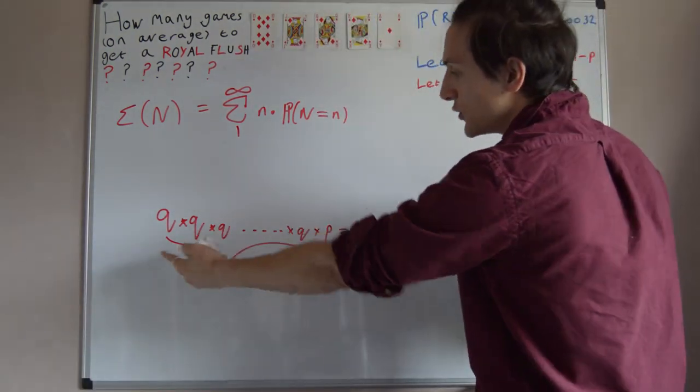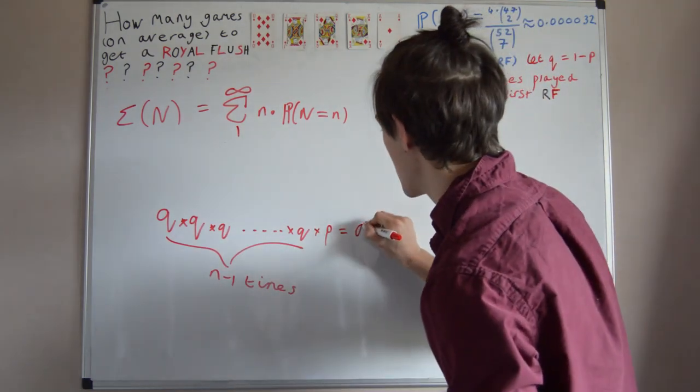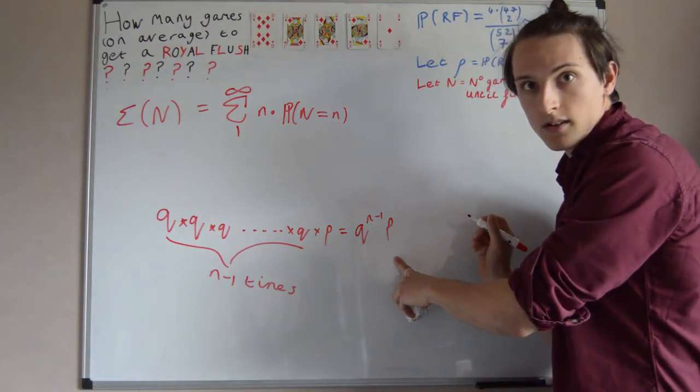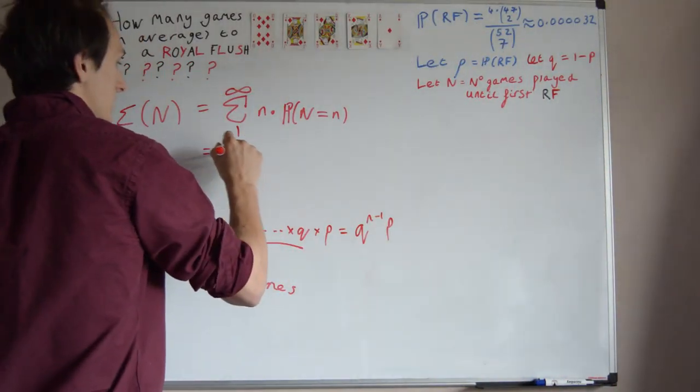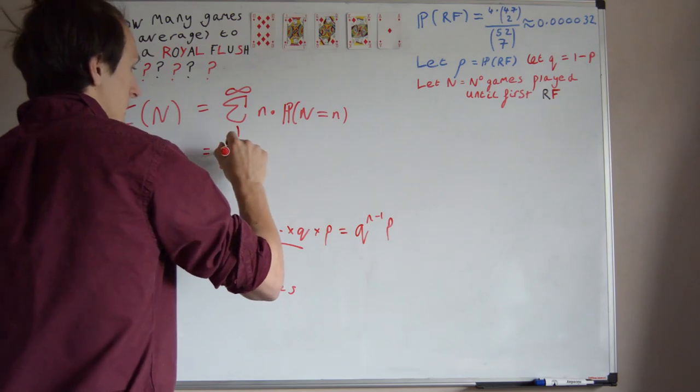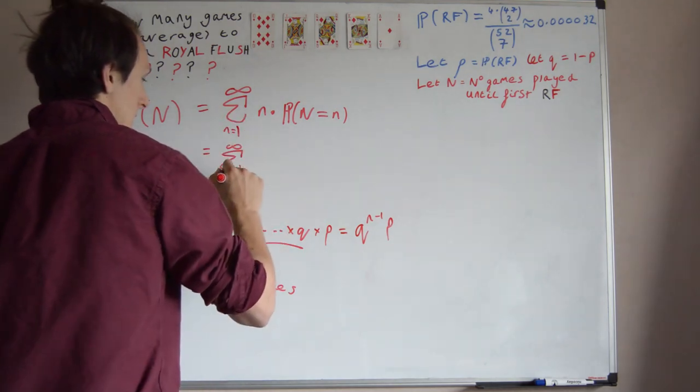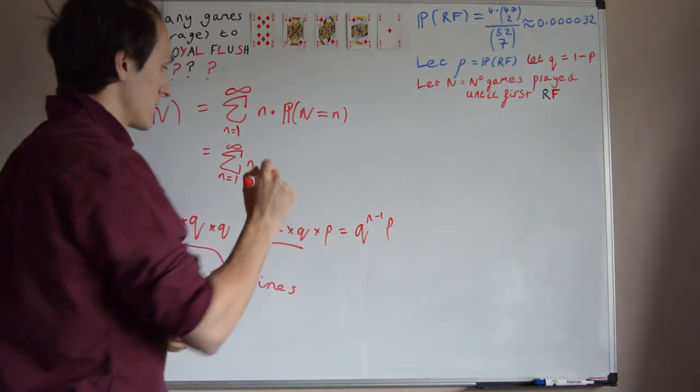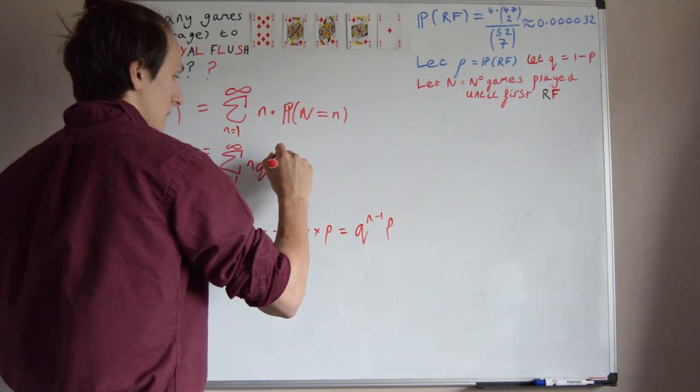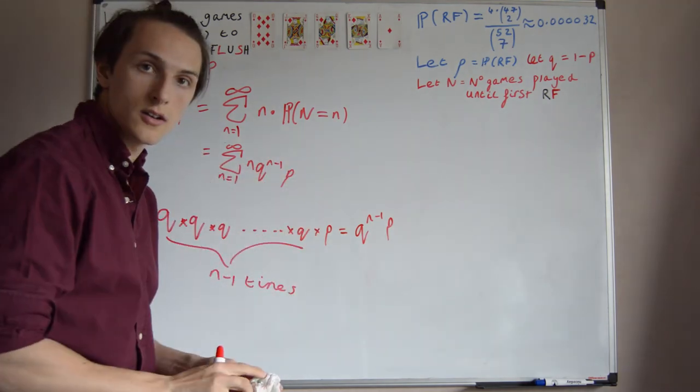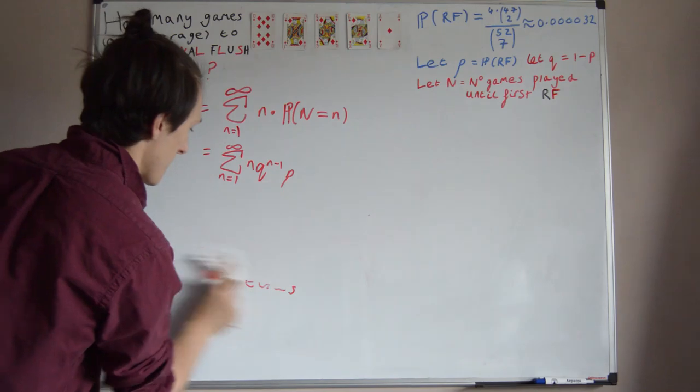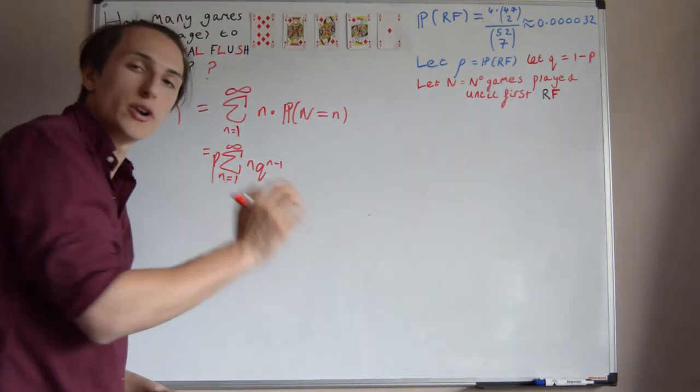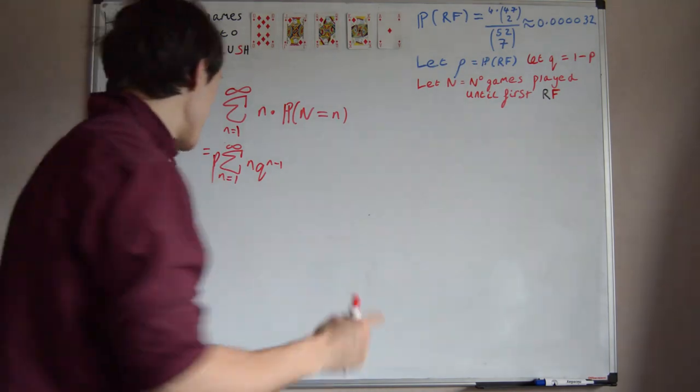Well what's this equal to? We have Q times itself n-1 times, so that's Q to the n-1, and then we just have a single P. So we can write this up here, so this is equal to the sum to infinity, n equals 1 of n times this guy, which is Q to the n-1 times P. P doesn't depend on n, so I can simply bring P out to the front, and then we just have to evaluate this expression.